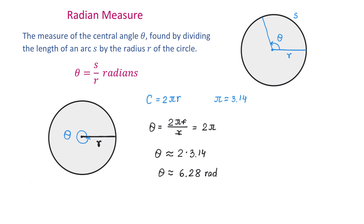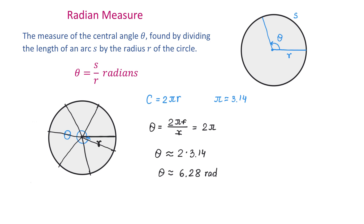In the circle, we can count 1, 2, 3, 4, 5, 6 and a little bit over 6 radians in one full rotation. This is how many times the radius fits into the circumference of the circle.